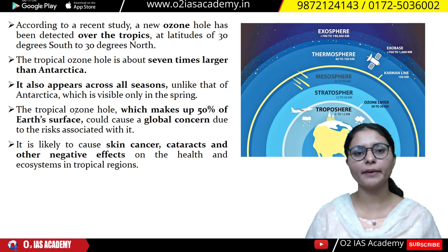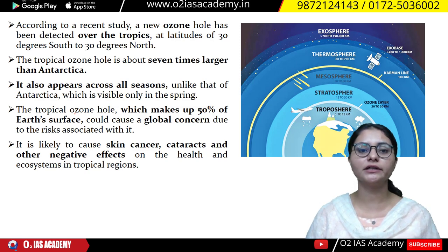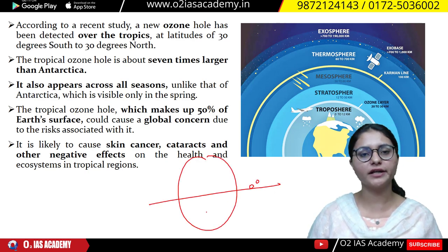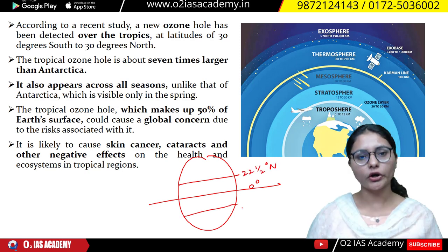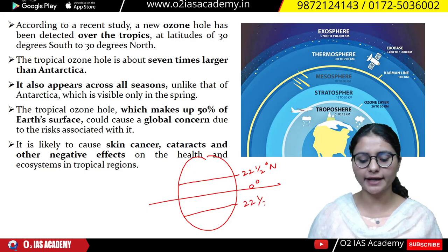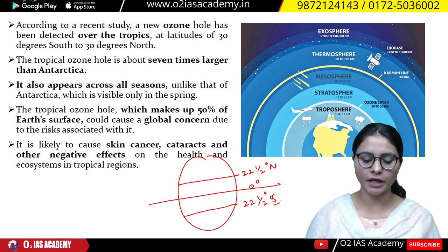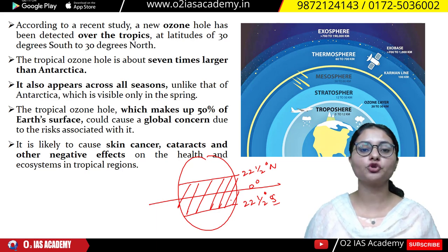Next, let's talk about the ozone hole. As you know, the ozone hole was previously seen in the Antarctica region. But recently, a study has told us that an ozone hole has been detected in the tropics region of the Earth. The tropics region lies between the Tropic of Cancer at 22.5 degrees north and the Tropic of Capricorn at 22.5 degrees south latitude. So this ozone hole has been detected in your tropics region.